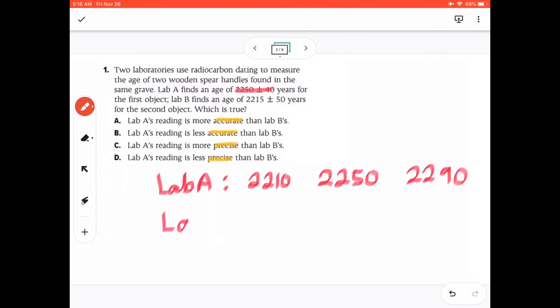Whereas for lab B, the readings are 2,215 ± 50 years. So your mid value is 2,215. If you add 50 years to that, it will be 2,265. And then if you minus 50 years from that, it's 2,165.